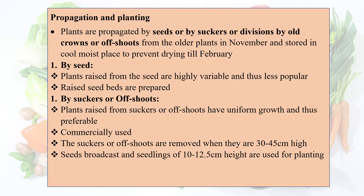Suckers or offshoots are removed when they are 30 to 45 cm high. Seeds are broadcast and seedlings of 10 to 12.5 cm height are used for planting.